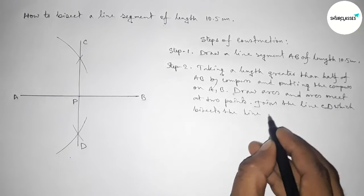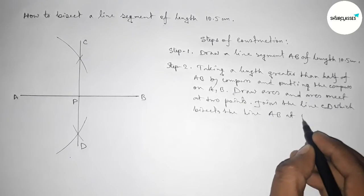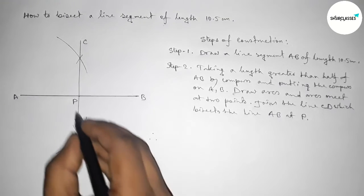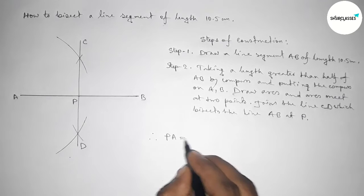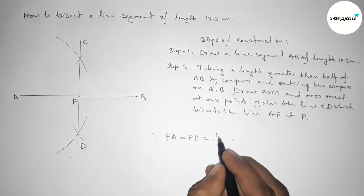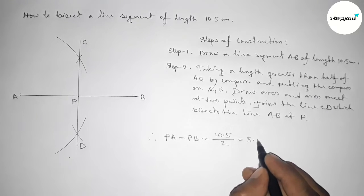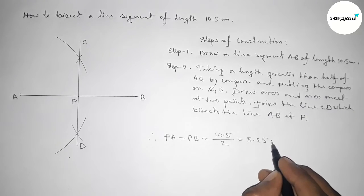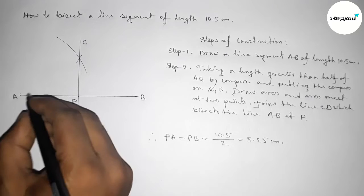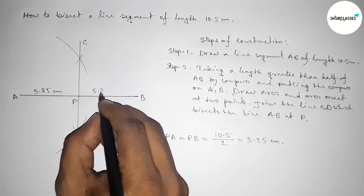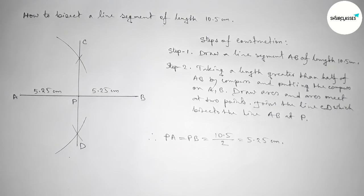Therefore the length PA equals PB. So PA equals PB equals 10.5 by 2, which is 5.25 centimeters. So this length is 5.25 and this is 5.25 centimeters. That's all, thanks for watching. Please share it with your friends.